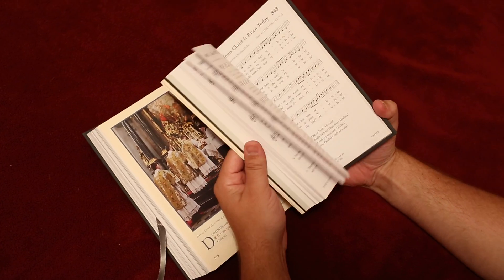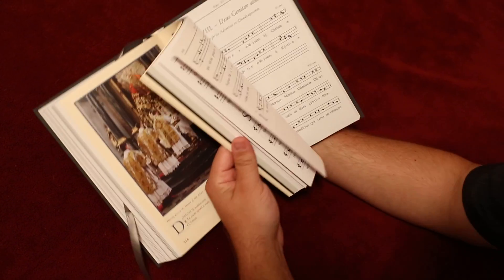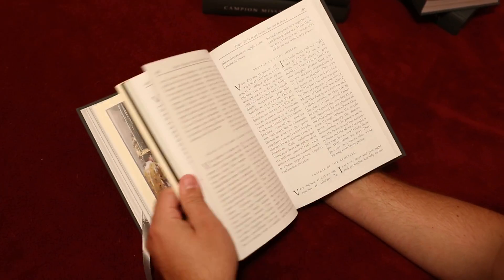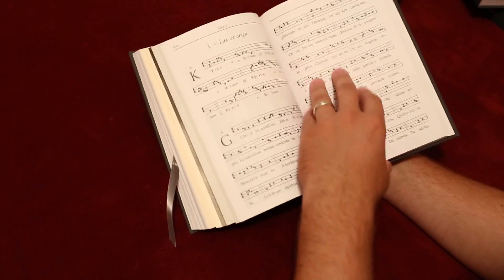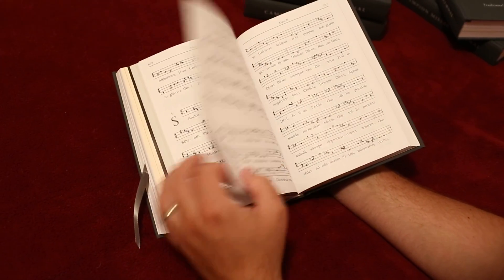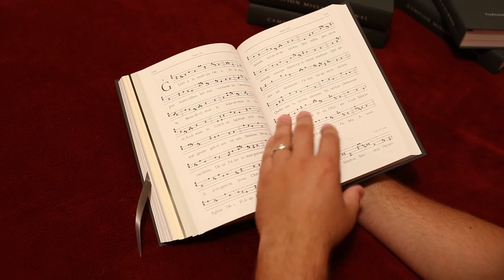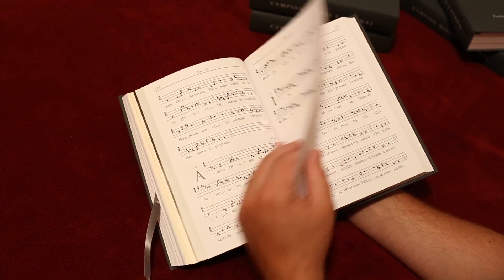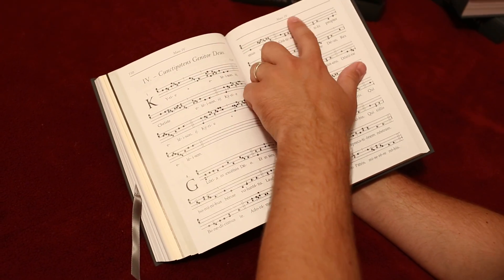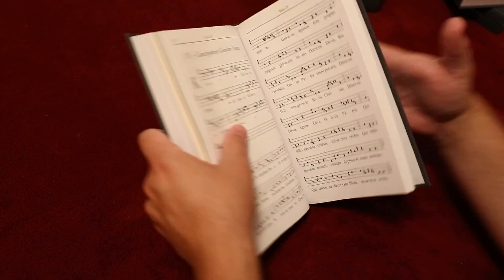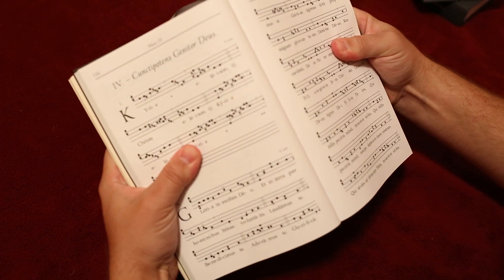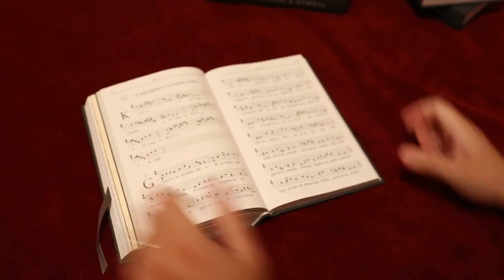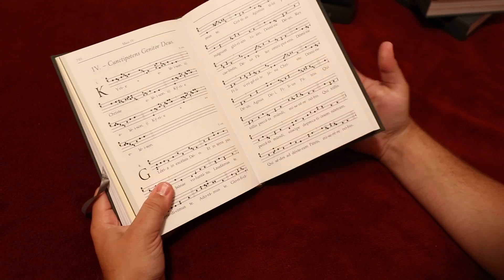The masses are numbered in a way that makes sense, right? Numerically. One, two, three, et cetera. So if you know, for example, you're singing Mass 4, then you just have to use the headers at the top of the page, and again, these are strong books. You can take it like that, you can bend it back, and they're incredibly strong books.